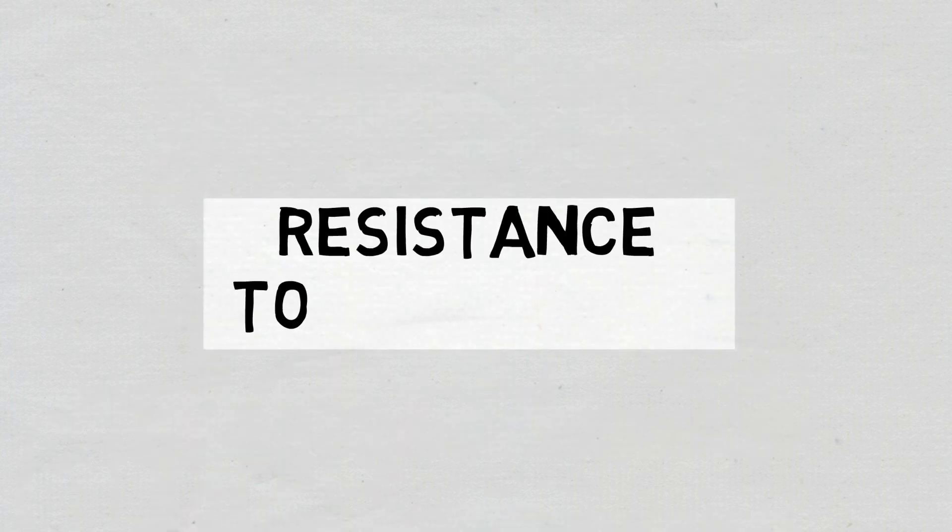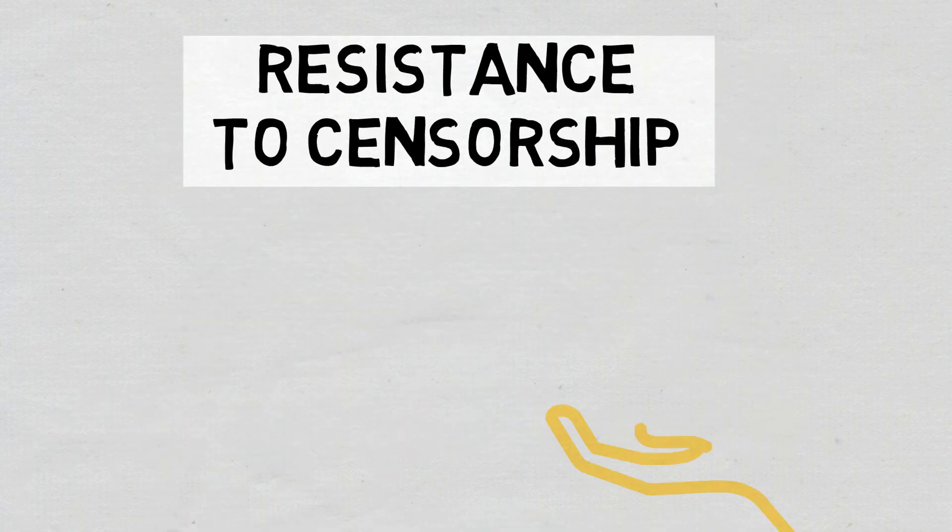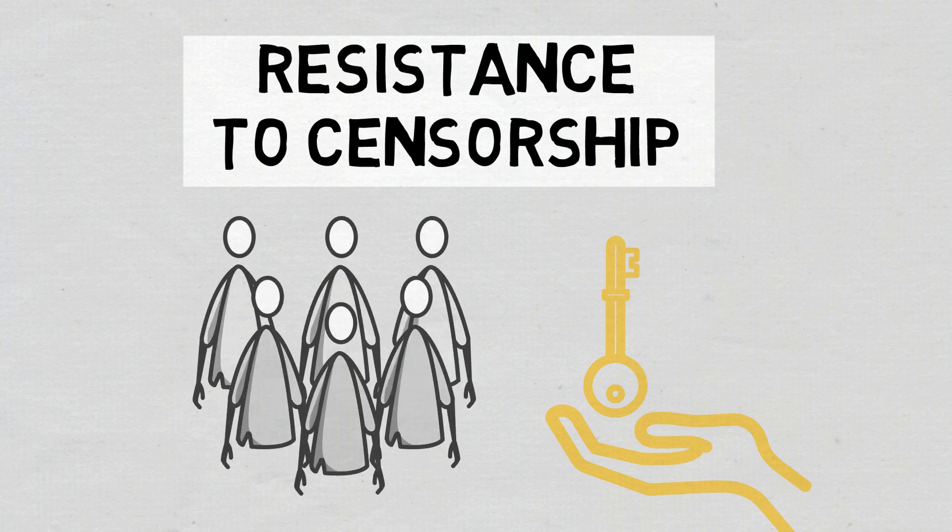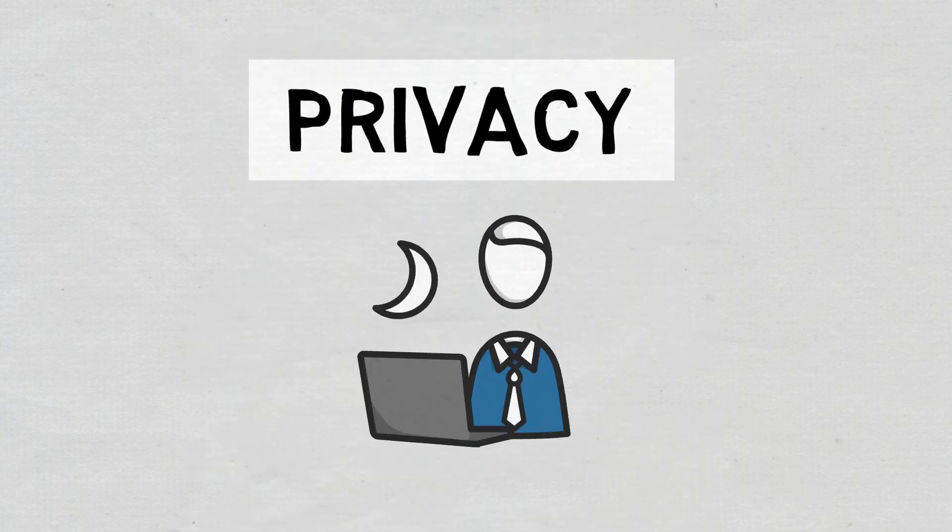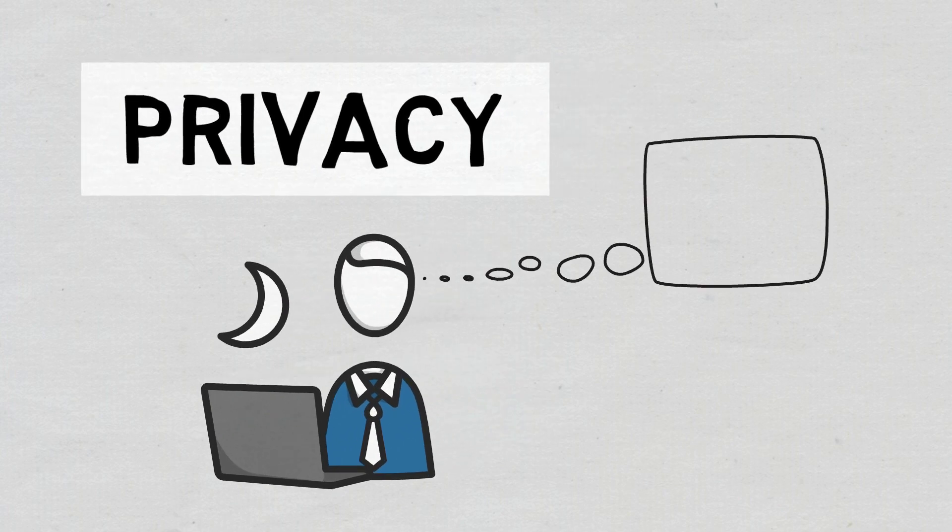Resistance to censorship. No single entity on the network can block users from reading data, deploying dApps, or submitting transactions. Privacy. Smart contracts can be written and executed privately, so you don't need to provide real-world identity.